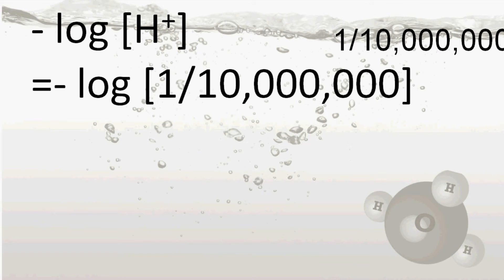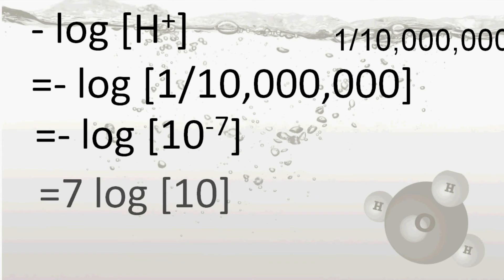That is 1 by 10 to the power 7, so 1 by 10 to the power 7 is 10 to the power minus 7. We know the rules of log: this minus 7 comes here, minus and minus becomes plus, so we get 7 log 10. Now log 10 is equal to 1, so the pH is 7.